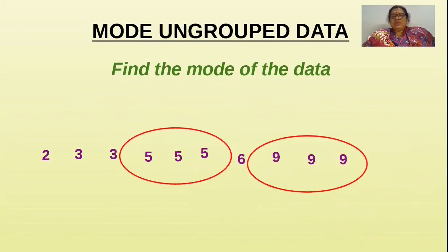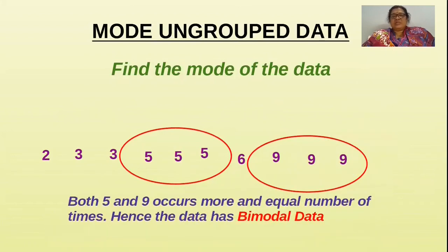When you look at the data 5 and 9 numbers occur frequently. Both 5 and 9 occur more and equal number of times. Hence the data is bimodal data.